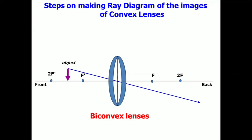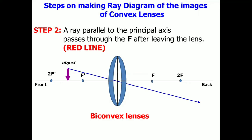Second step is, a ray parallel to the principal axis. So again, a red line will appear, representing this step. Passes through the F after leaving the lens.